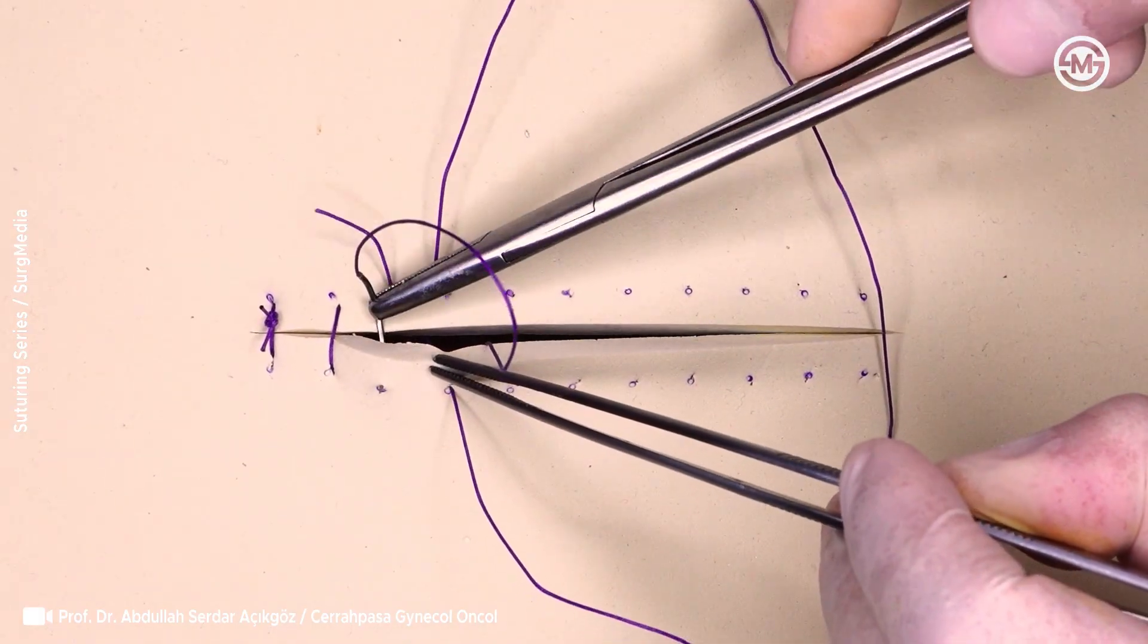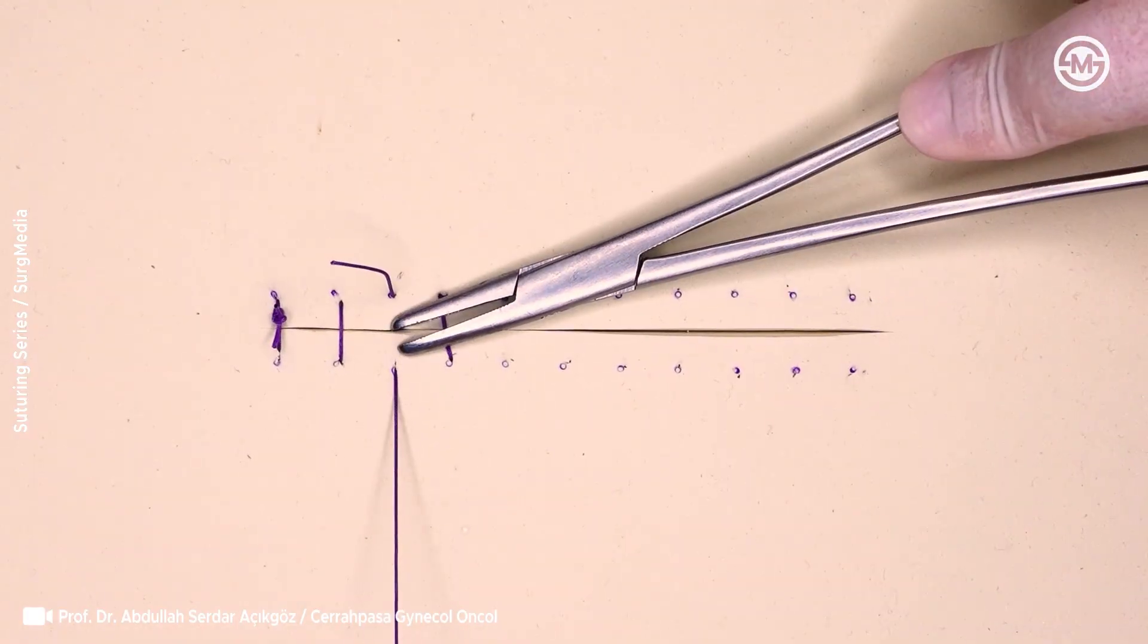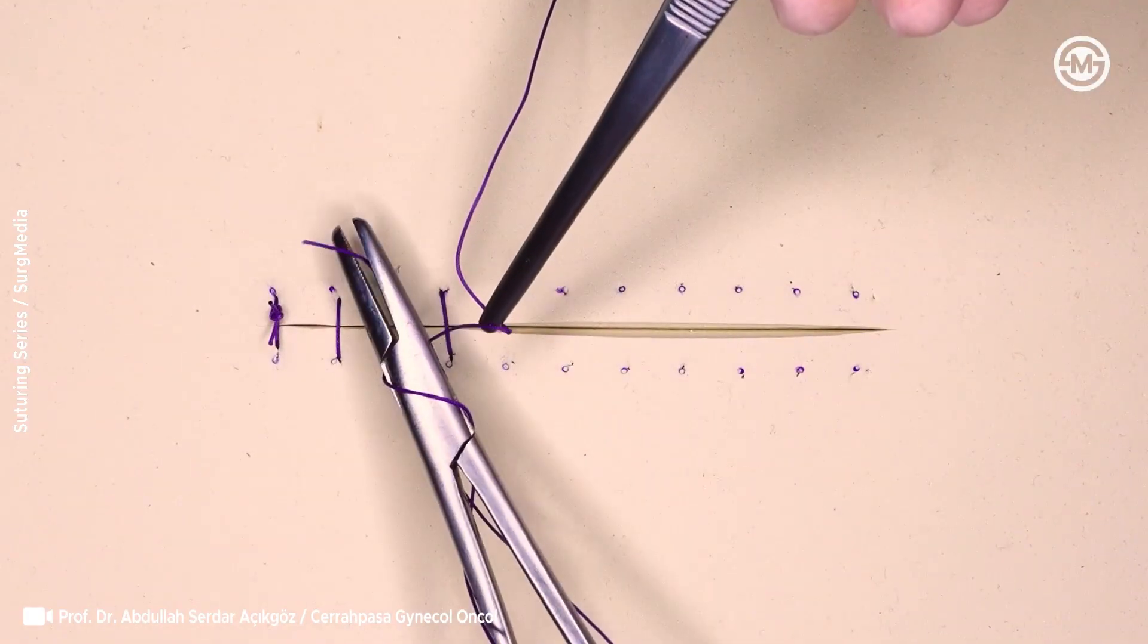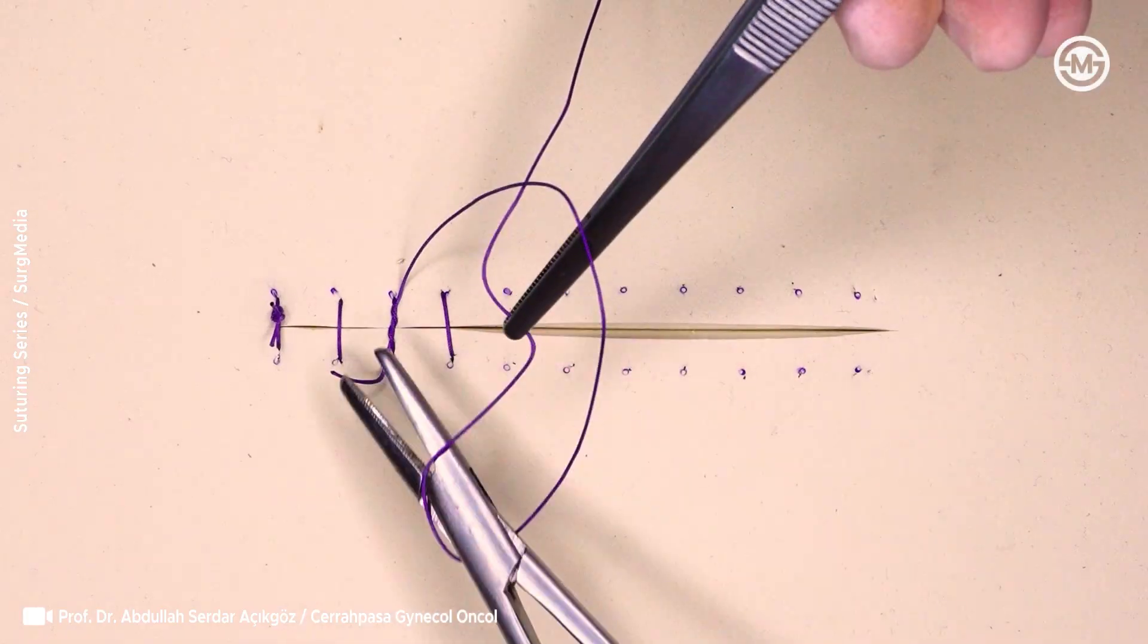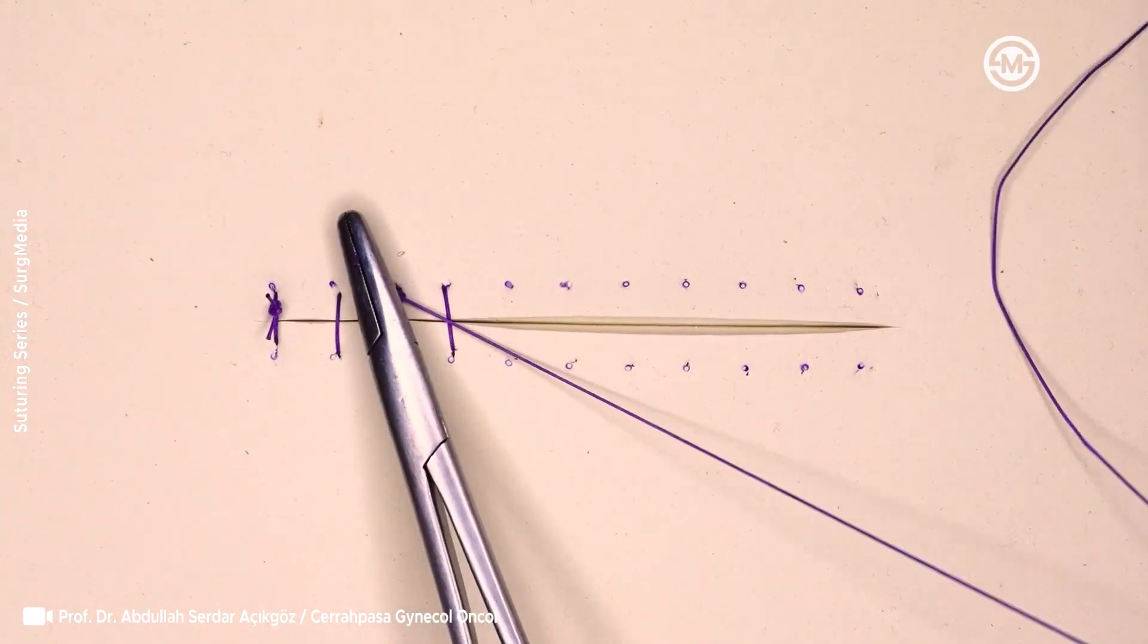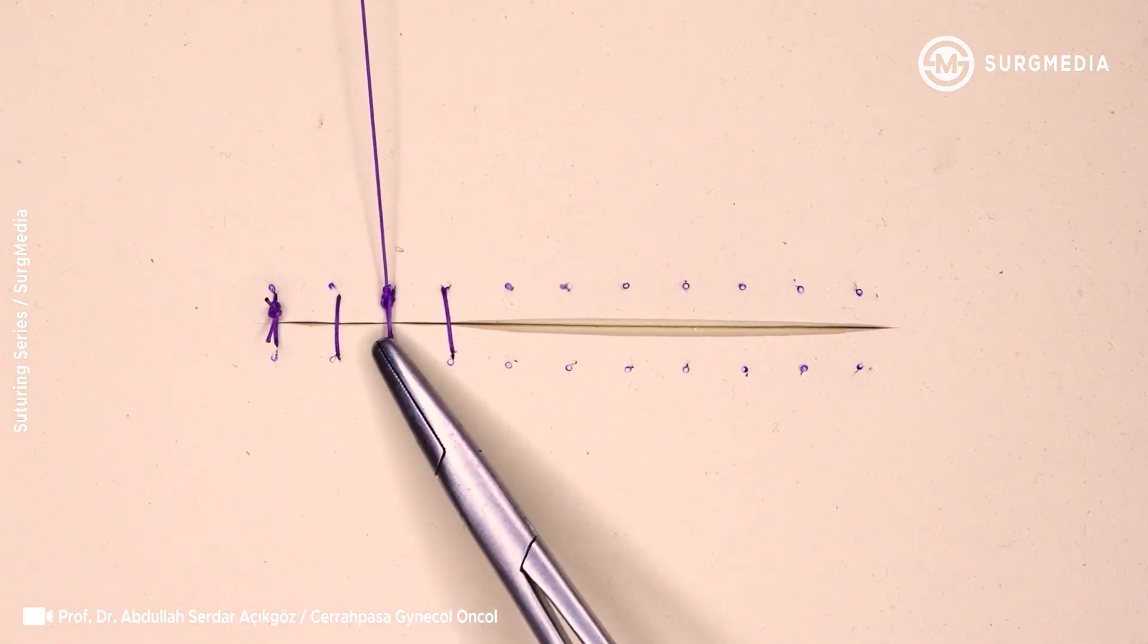This inverse figure of eight technique provides the same hemodynamic stability and skin edge approximation as the standard figure of eight. But because the crossing part of the suture is buried under the wound surface, it's not only more aesthetic and less likely to be accidentally disturbed.